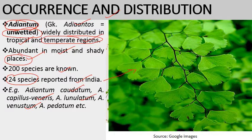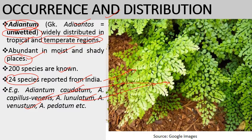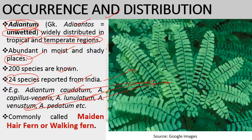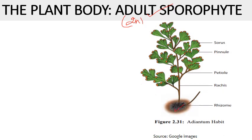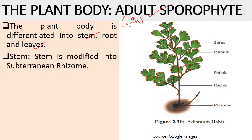These species show variation in their habit, which helps in classifying them — the leaf arrangement and leaf shape are different in each. The adult sporophyte plant body is differentiated into true root, stem, and leaves. The stem is modified into a subterranean rhizome. The rhizome may be long and creeping — growing horizontally beneath the soil surface — or short and ascending, sometimes erect or semi-erect, showing variation in its growth pattern.